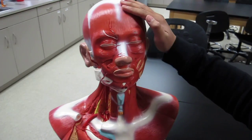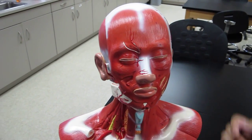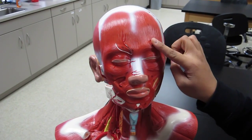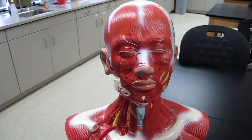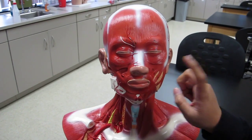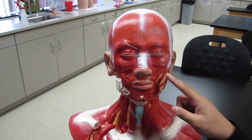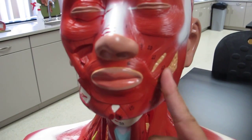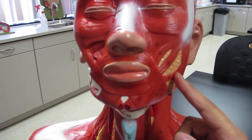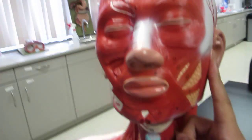Number one is the frontalis, number four is the orbicularis oculi, number seven is nasalis, number ten is the levator labiae superioris, eleven is the zygomaticus minor, twelve is the zygomaticus major, thirteen is risorius, fourteen is the masseter.